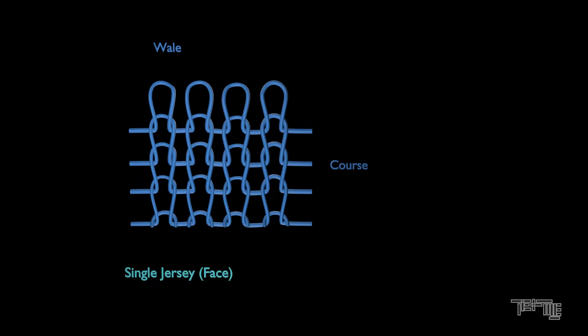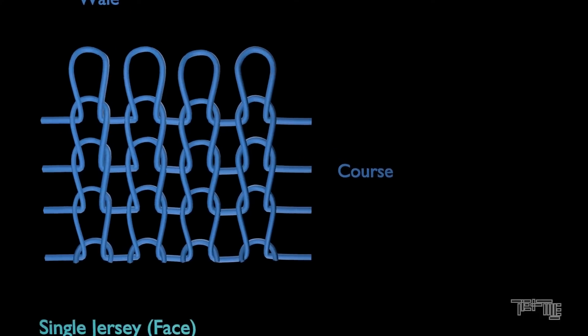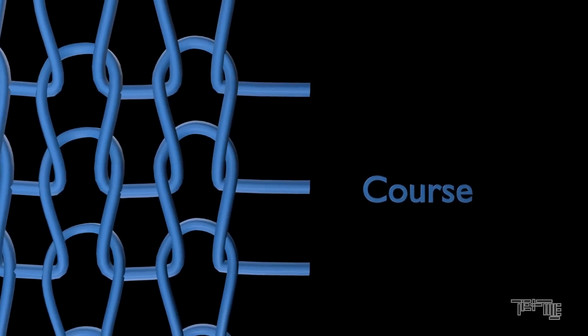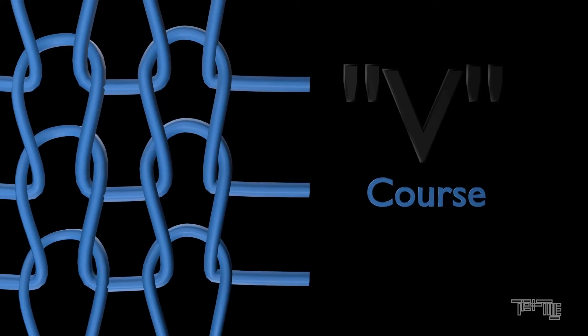Single jersey is the most basic structure of weft knitted fabrics. It is made by one set of needles. The fabric face and back side show different appearances. The face side shows the side limbs of the loops, which shows a V-shaped structure and creates a smooth surface.